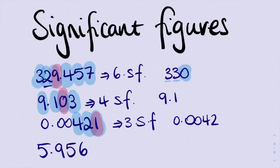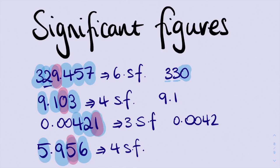Now we're going to look at our last one. We have 1, 2, 3, 4 significant figures. In order to figure out what's going to happen, we look at our third significant figure, which is a 5. That 5 is a critical digit and it's going to make our 9 go up 1. The number above 9 is 10, so we're going to put a 0 on the end, put our decimal place in, and add 1 to that 5 making it 6. So we're going to end up with 6.0 as our final answer. And that is how we use significant figures.